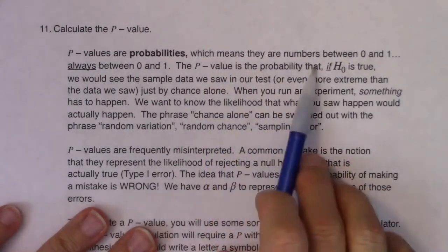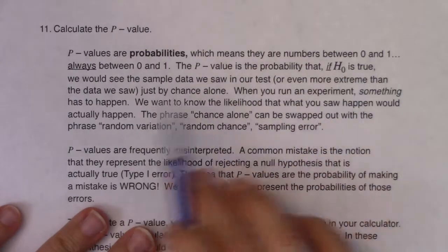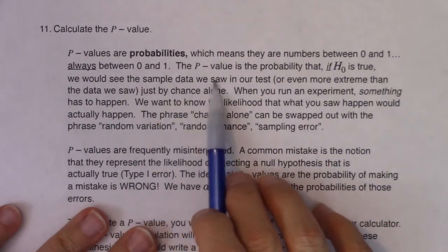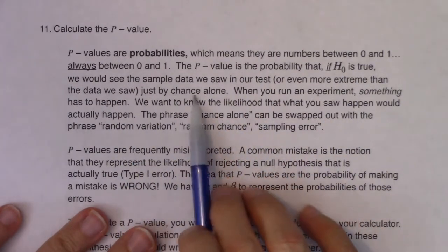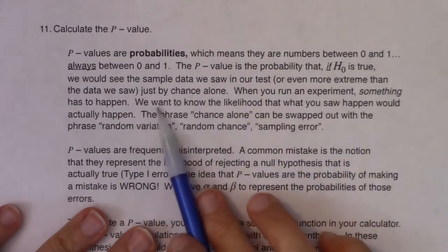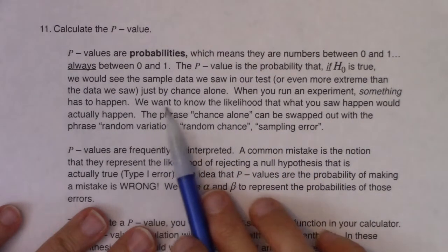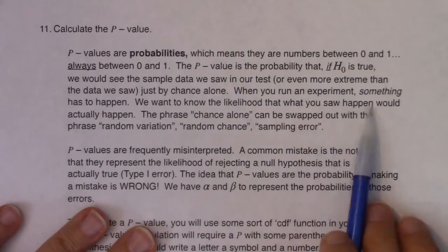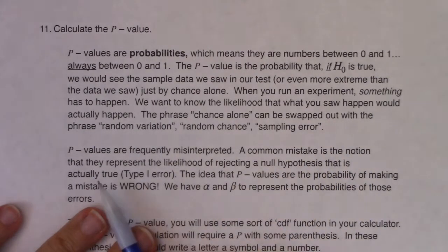So the p-value is the probability that if h-naught is true, we would see the sample data we saw in our test just by chance alone. Because when you run an experiment, something has to happen. So we want to know the likelihood that what we saw happen would actually happen.